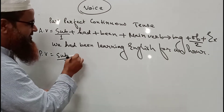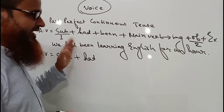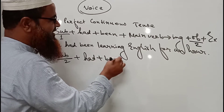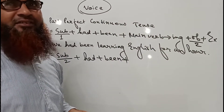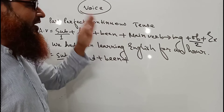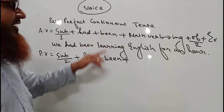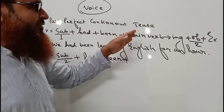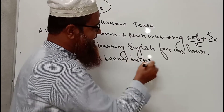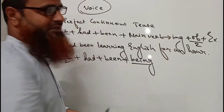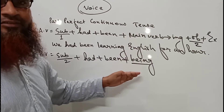The object will become the subject here. 'Had' will remain as 'had'. Then 'been' must come. And as there is '-ing' with the verb, we must write 'being' — we have to write this extra word 'being'. This is one of the greatest characteristics of the passive form of past perfect continuous tense: when there is '-ing' with the verb, we must write 'being'.